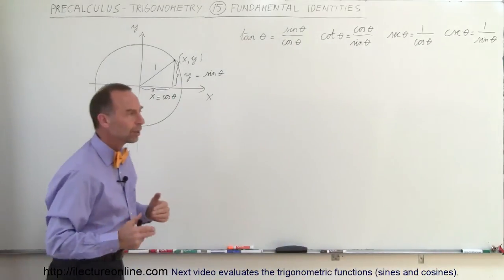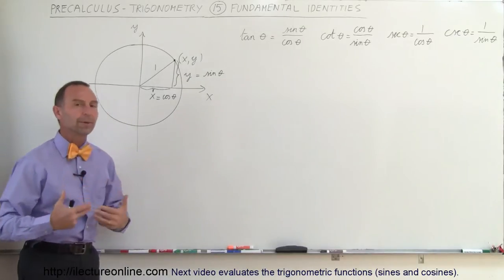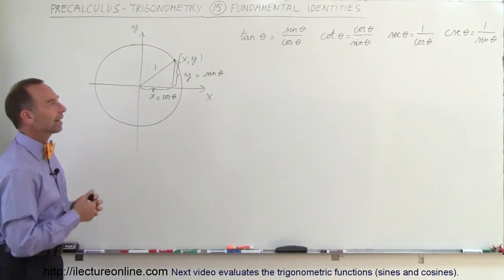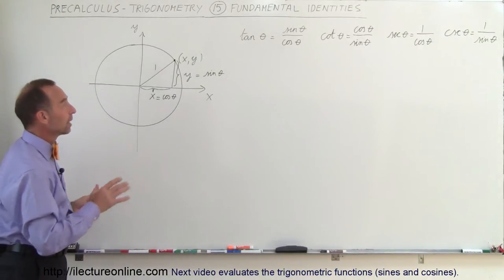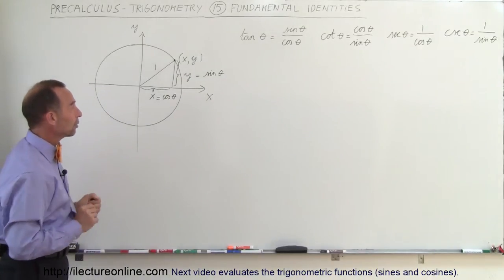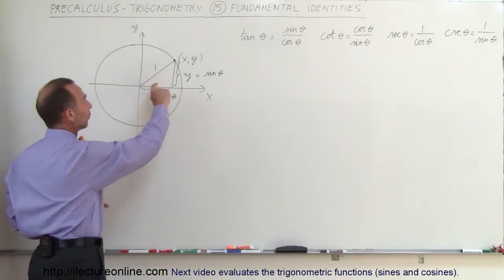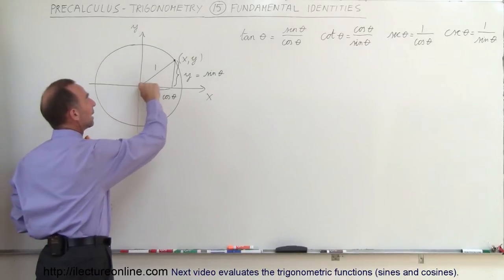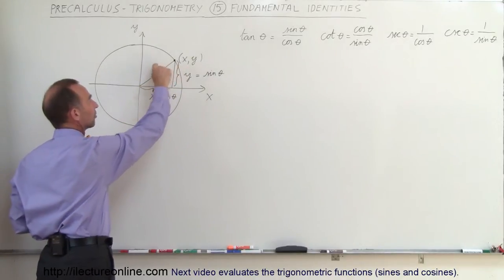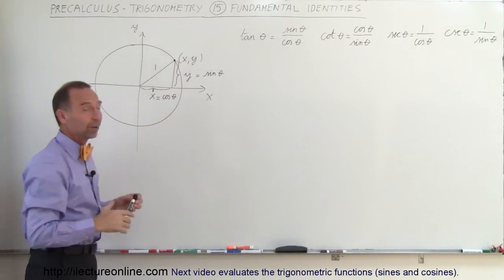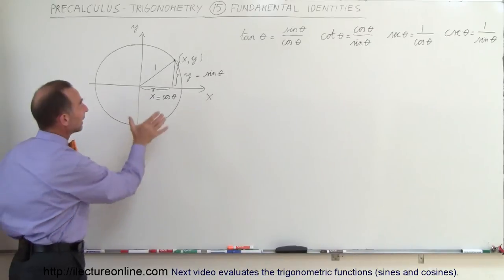From that, we can slowly start building up some basic identities. The first one I want to do is take a look at the unit circle. The radius of the unit circle is equal to 1 — that's what makes it the unit circle.